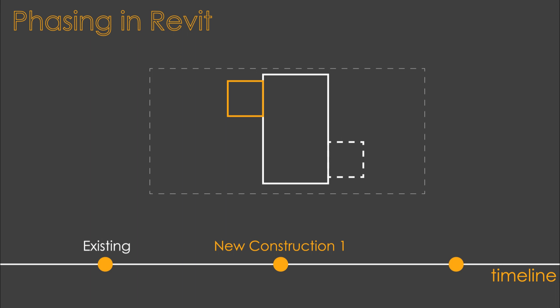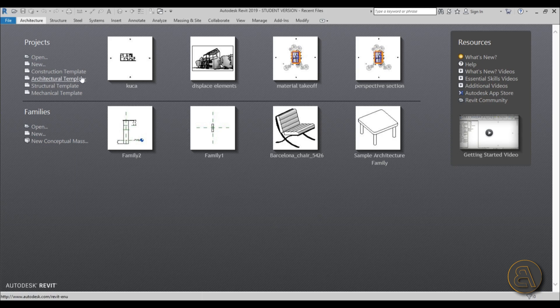So he wants to demolish the existing annex and build a new one on the left side. We'll be using the demolish tool for this. After this phase is done, there's one more phase where he wants to add a new building in the corner — that will be a second new construction phase of the whole project.